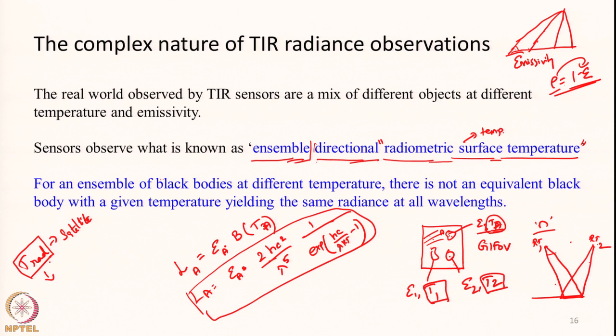That is why the surface temperature calculated from satellites should strictly be called ensemble directional radiometric surface temperature. One more important fact: for an ensemble of black bodies at different temperatures, there is no equivalent black body at a given temperature yielding the same radiance at all wavelengths. For simplicity, let us assume we have 2 black bodies within one GIFOV — just 2 black bodies.